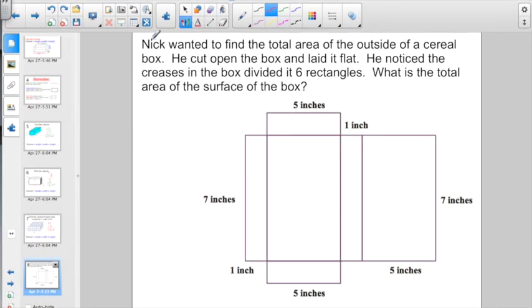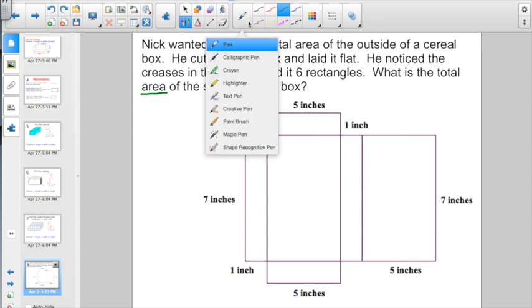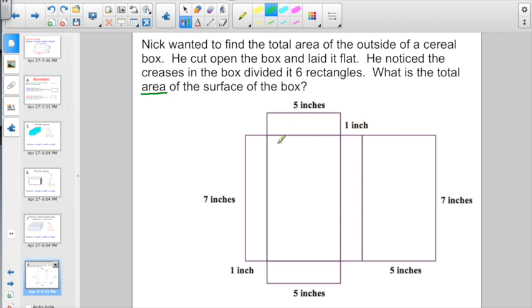Here's one a little bit different. Check this out. Nick wanted to find the total area of the outside of a cereal box. He cut open the box and laid it flat, and noticed that the creases in the box divided it into 6 rectangles. What is the total area of the surface of the box? This is not a volume problem. This is a surface area problem. But we've got to start taking a look right now about all the different areas that you have. You've got to think of this as 6 different rectangles. So, 6 different rectangles, you need to think about 6 different lengths and widths.